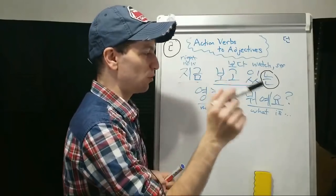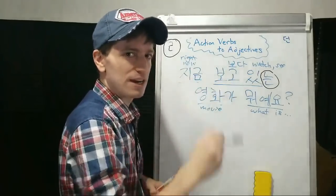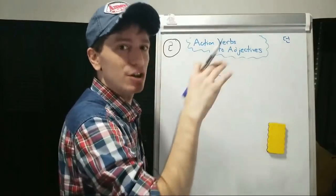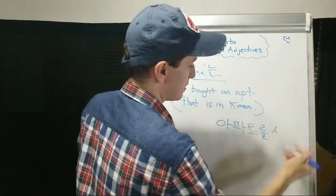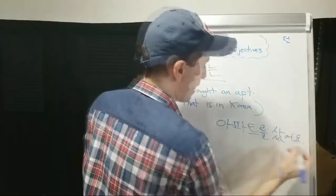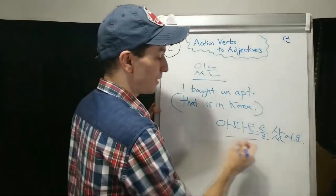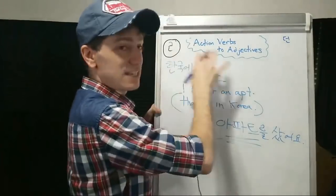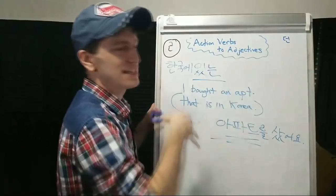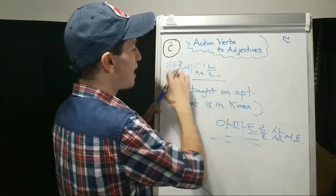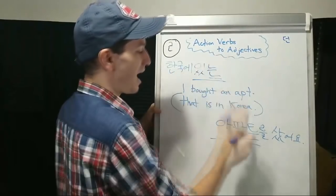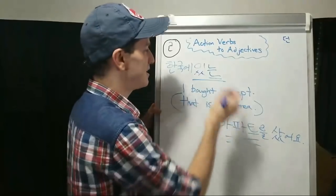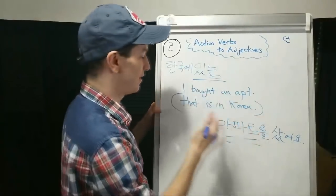지금 보고 있는 영화가 뭐예요? — What is that movie that you're watching right now? I bought an apartment that is in Korea — 아파트를 샀어요. 한국에 있는 — so 한국에 있어요 by itself means it is in Korea. 한국에 있는 아파트를 샀어요 — I bought an apartment that is in Korea.